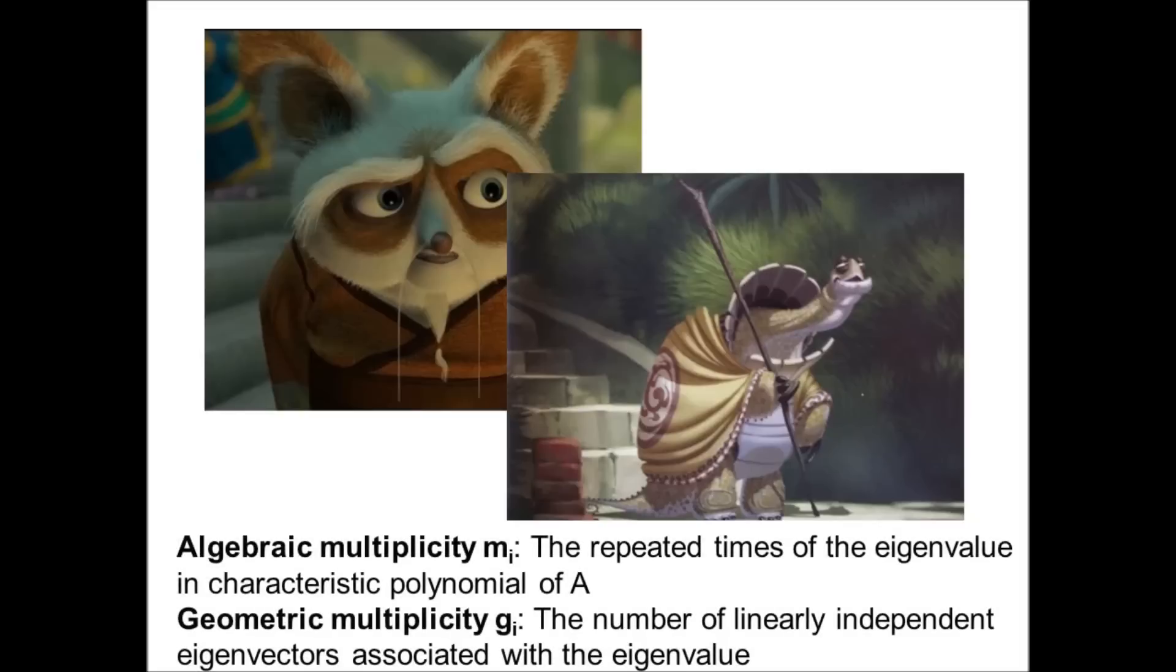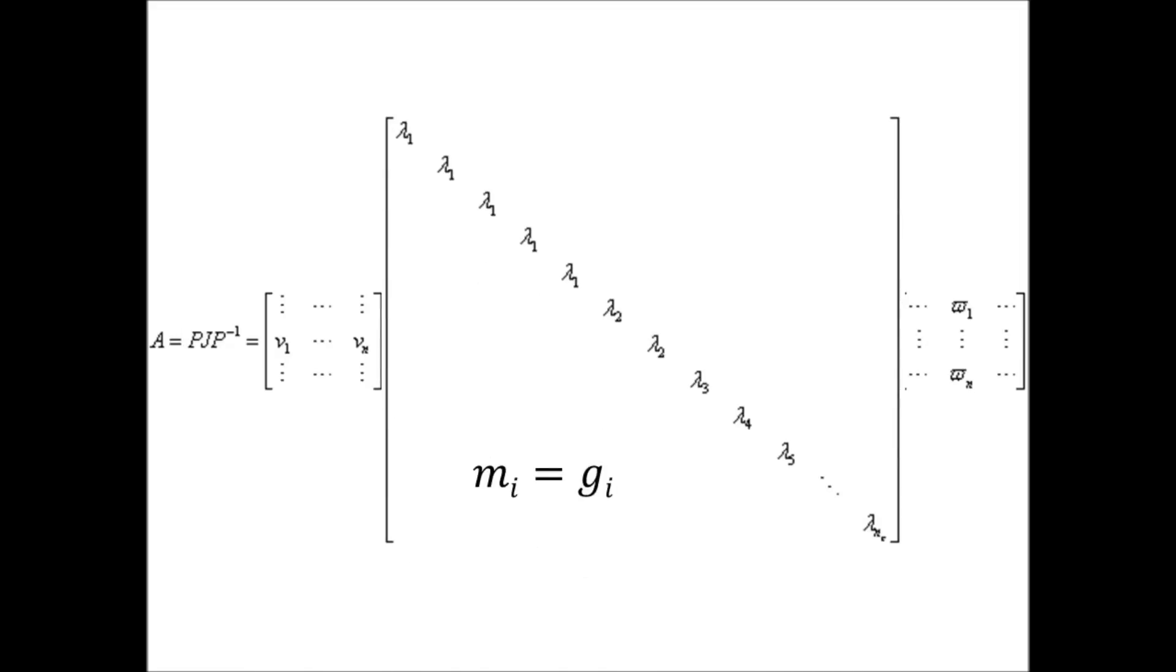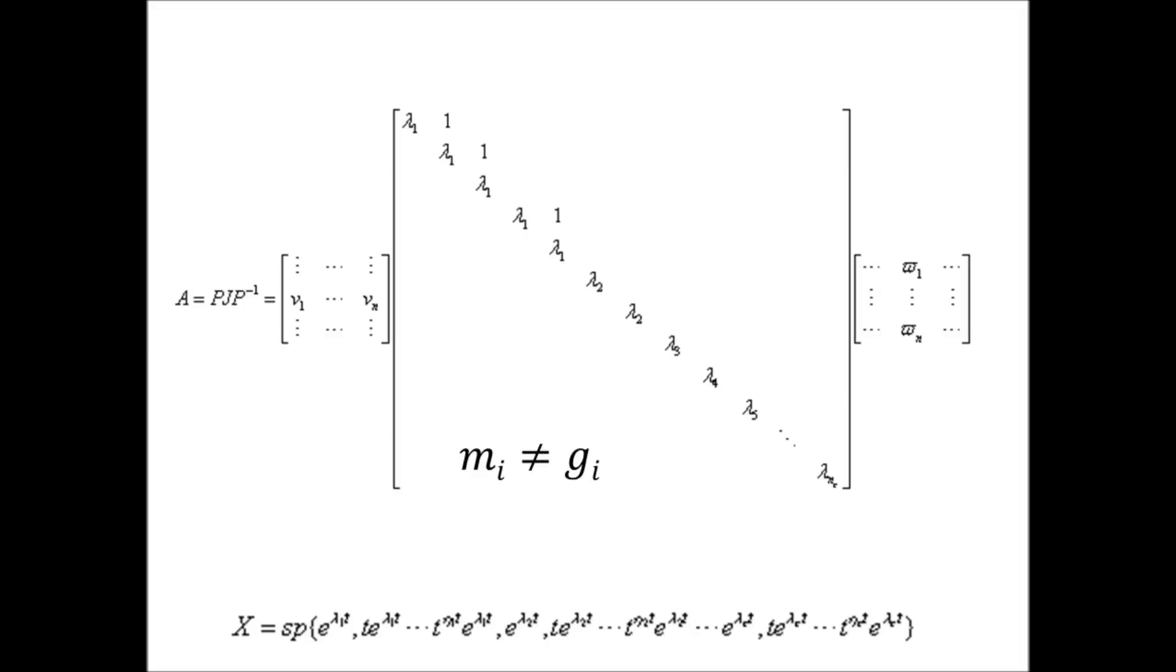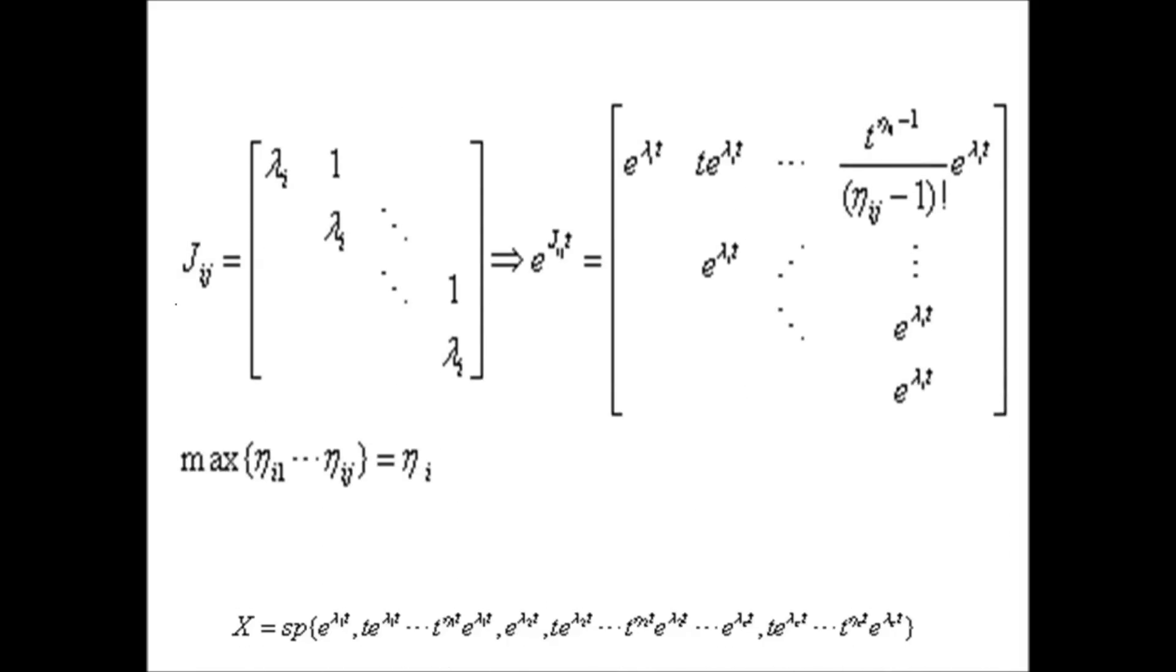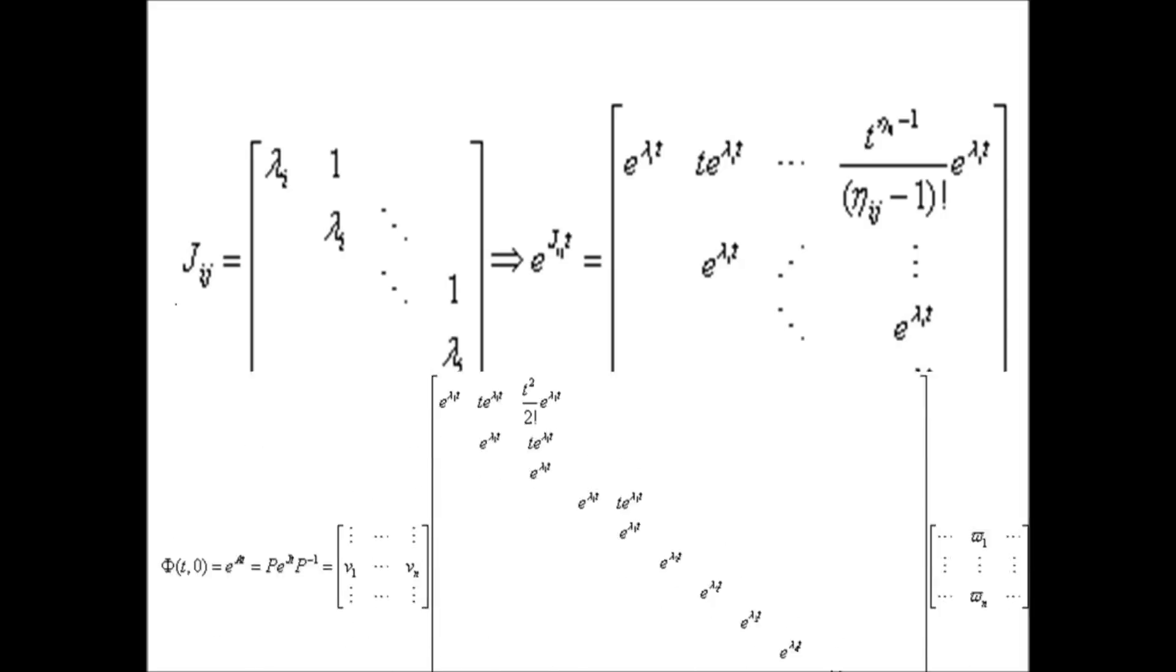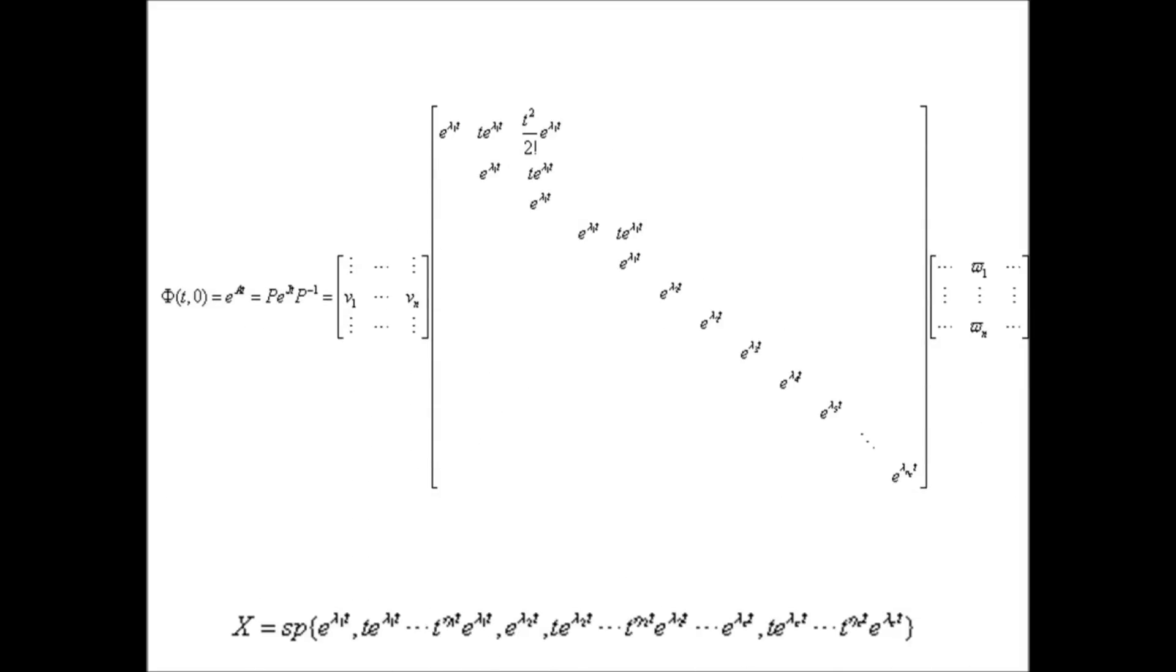We can start from algebraic and geometric multiplicities. When they are equal for all of A's eigenvalues, A is still diagonalizable even with repeated eigenvalues. Now, A has upgraded himself by reducing its geometric multiplicity. When gi is less than mi, the Jordan blocks will have 1s on the super diagonal. By computing e to the power JT, we can see that there appears new modes of A such like T times e to lambda T. Those are new loyal soldiers you didn't expect.